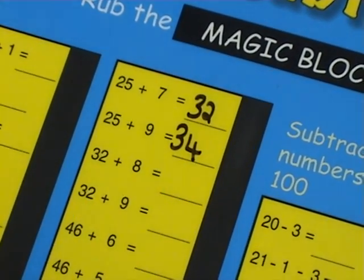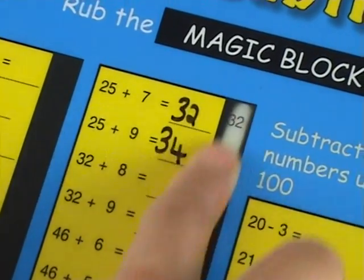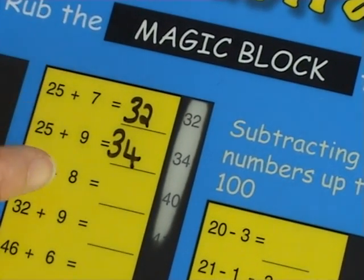They would complete the whole column. Then they rub the heat sensitive ink to reveal the correct answer, so the mat is self-checking.